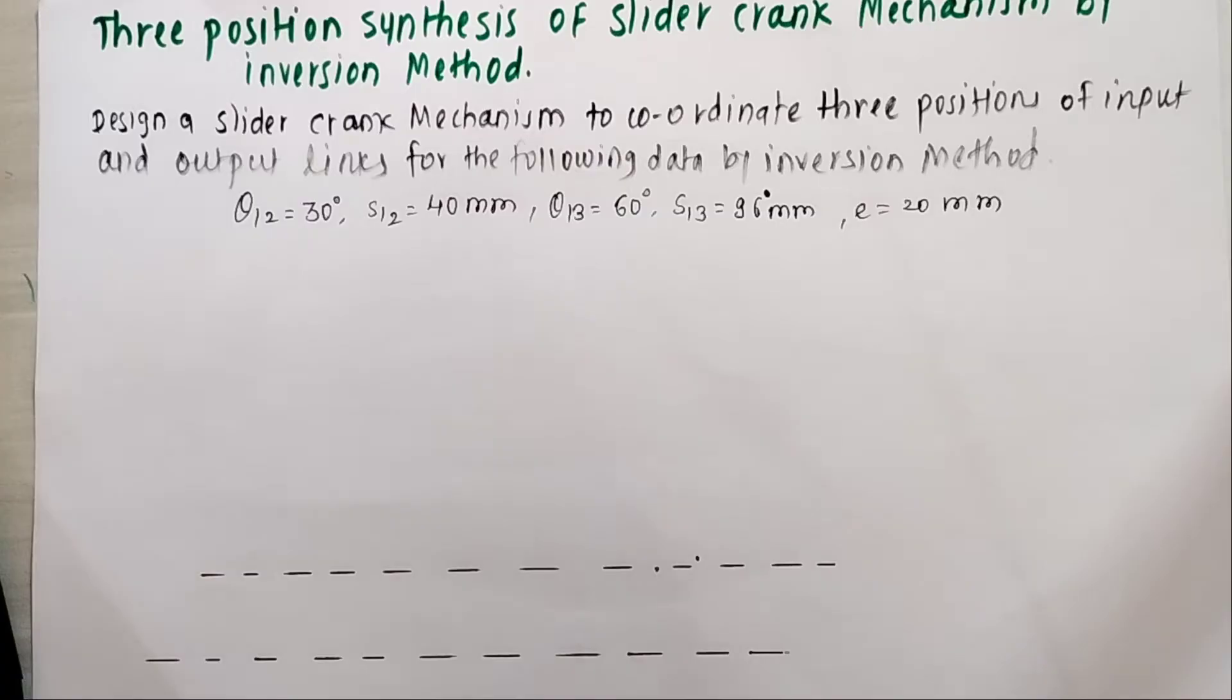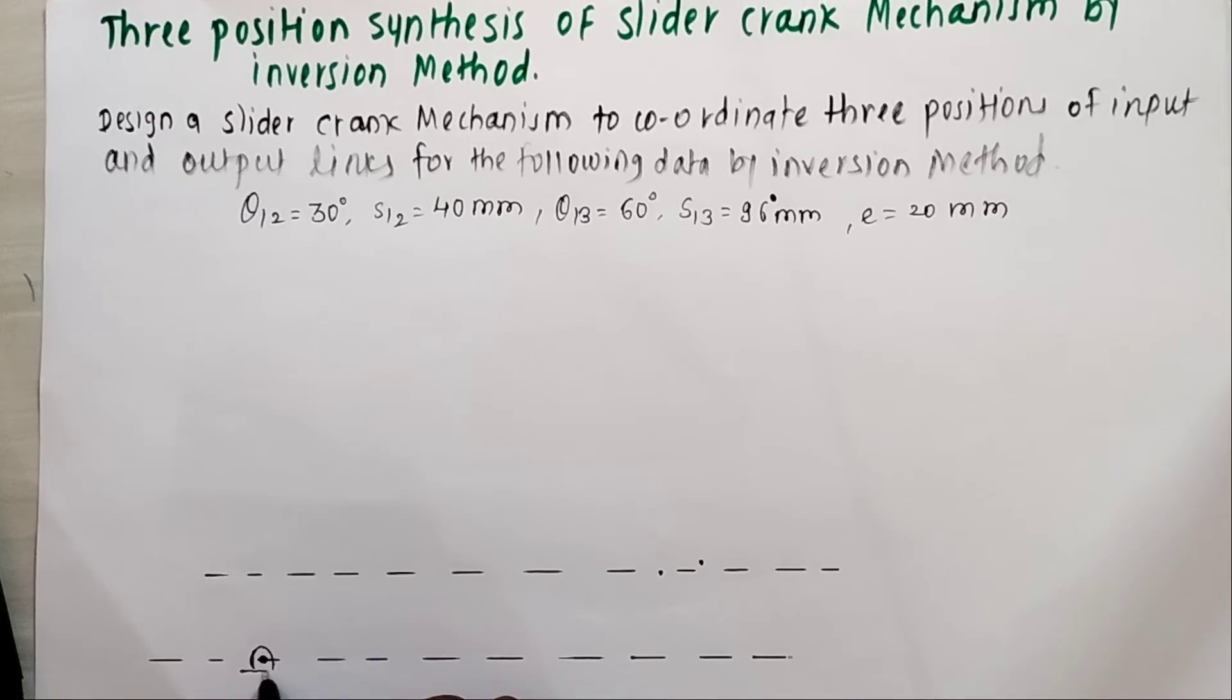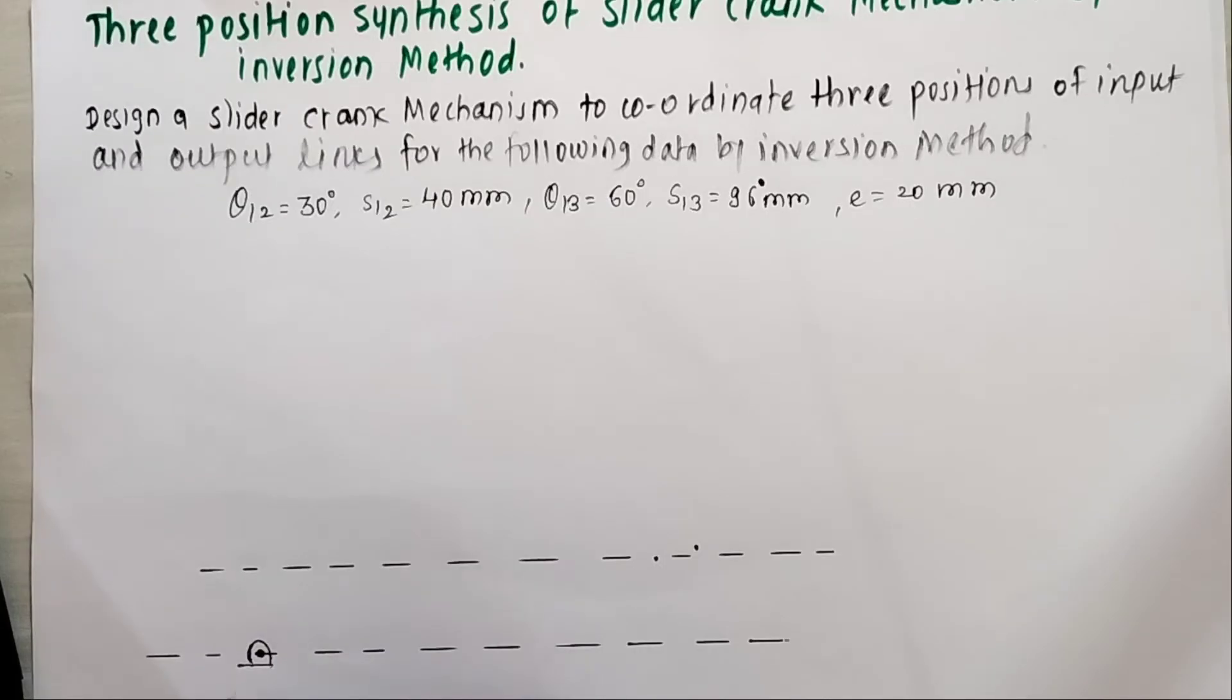After this we need to take point A for the fixed link center and point C on the slider path. Both points for the first position, so we call it A1 and C1. I will take point A1 arbitrarily on this line of the fixed link. As it is first position I call it A1.